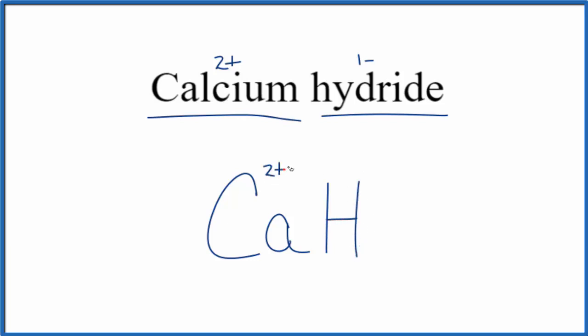Calcium we said is two plus in group two, and a hydride ion is one minus. So all of this needs to add up to zero, have a net charge of zero. To do that we could just put a subscript of two, so we have two of these hydride ions. Two times one minus, that's two minus, that'll balance out the two plus.